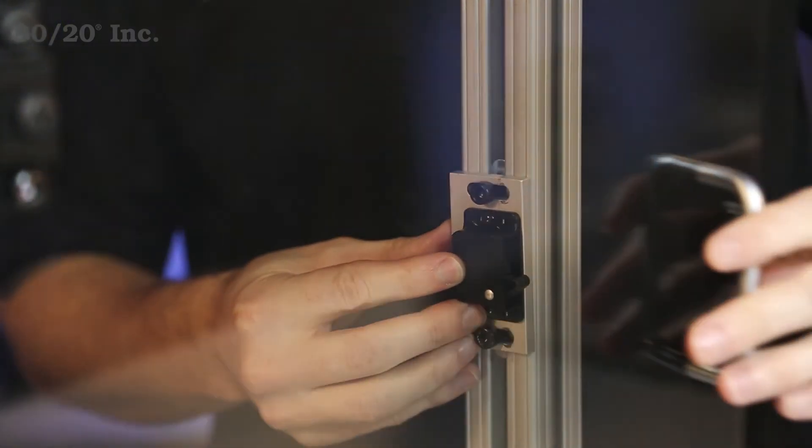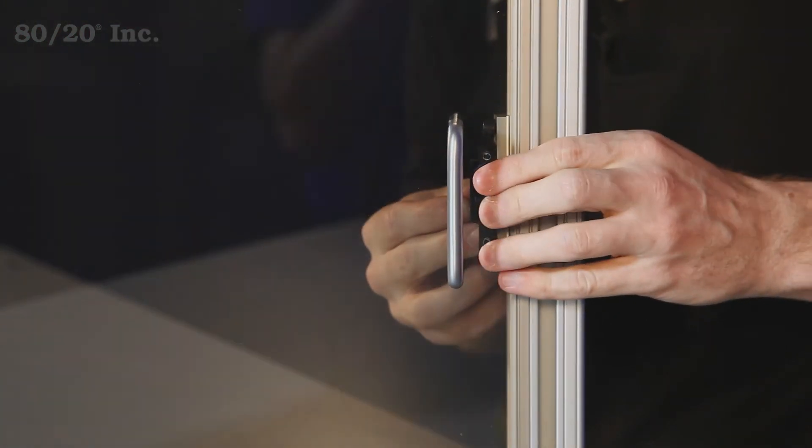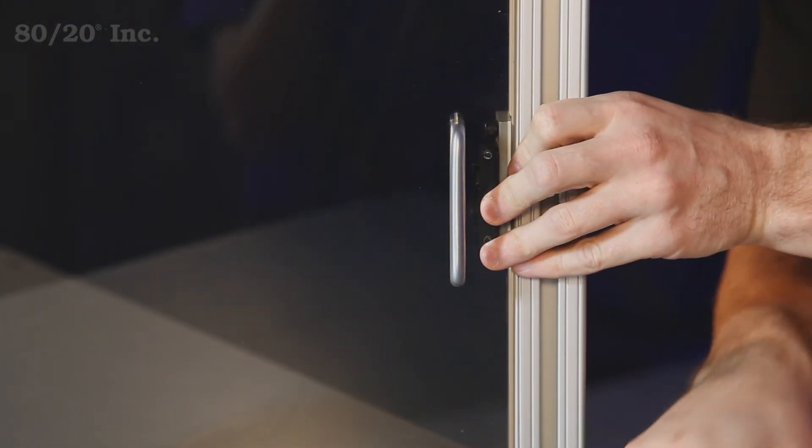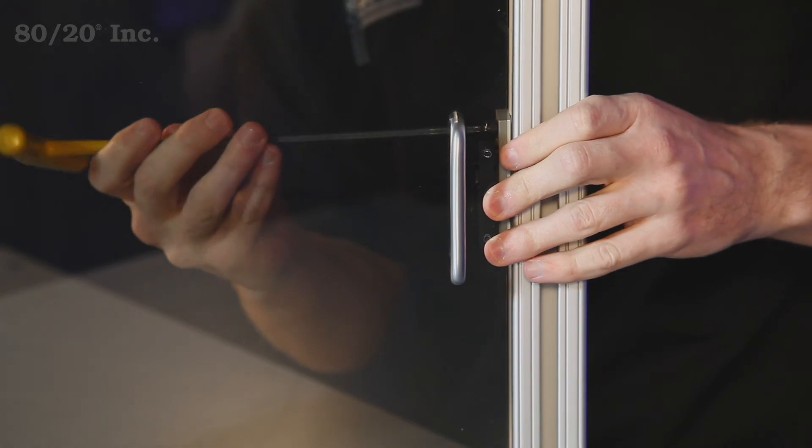So we'll go ahead and swing our latch towards our catch. We'll get those to join together. And once those are secure, we'll tighten down the bolts on the plate with our wrench.